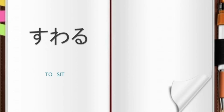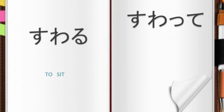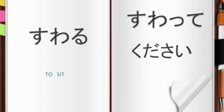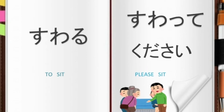For example, for the word suwaru, which means to sit, its te-form is suwatte. Suwatte alone is a command — it means sit or sit down. To make it more polite, we add the word kudasai: suwatte kudasai, meaning please sit.